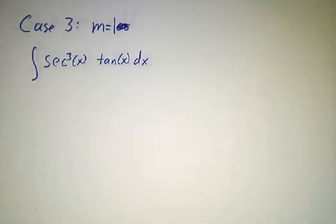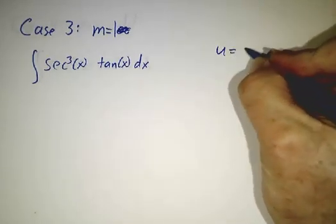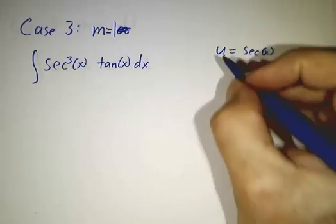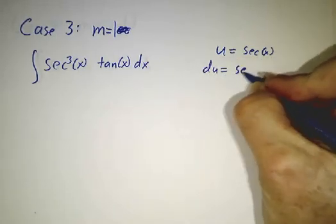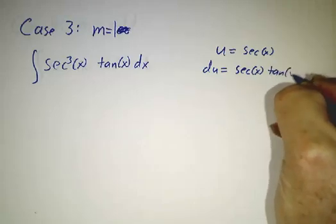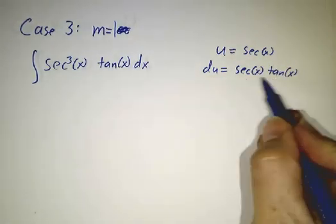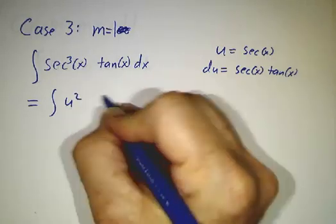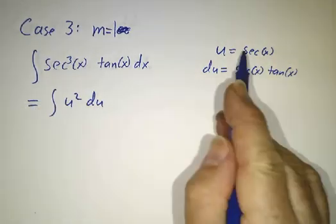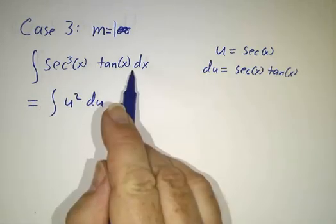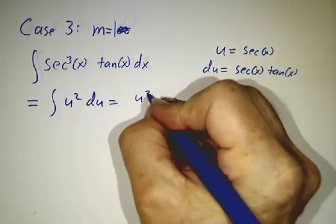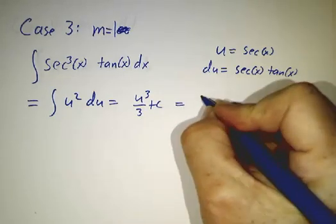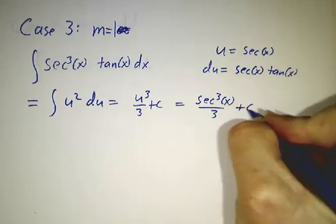The third case is when m equals one. Here we use u-substitution where u is secant of x instead of tangent of x. The derivative of secant is secant of x times tangent of x, so that one tangent is part of du, and one secant becomes part of du as well. For example, with secant cubed times tangent, this becomes the integral of u squared du — two secants are u squared, the third secant is part of du — giving u cubed over three plus a constant, which is secant cubed of x over three plus a constant.